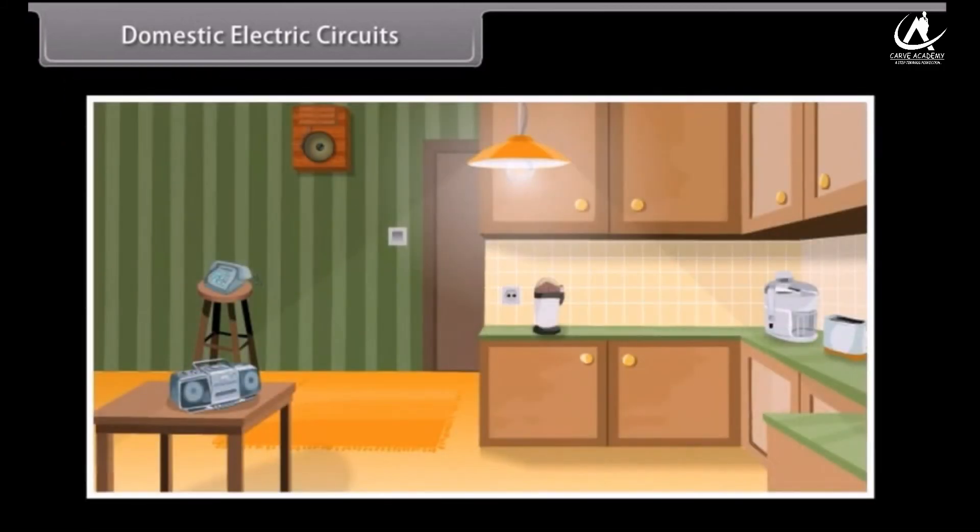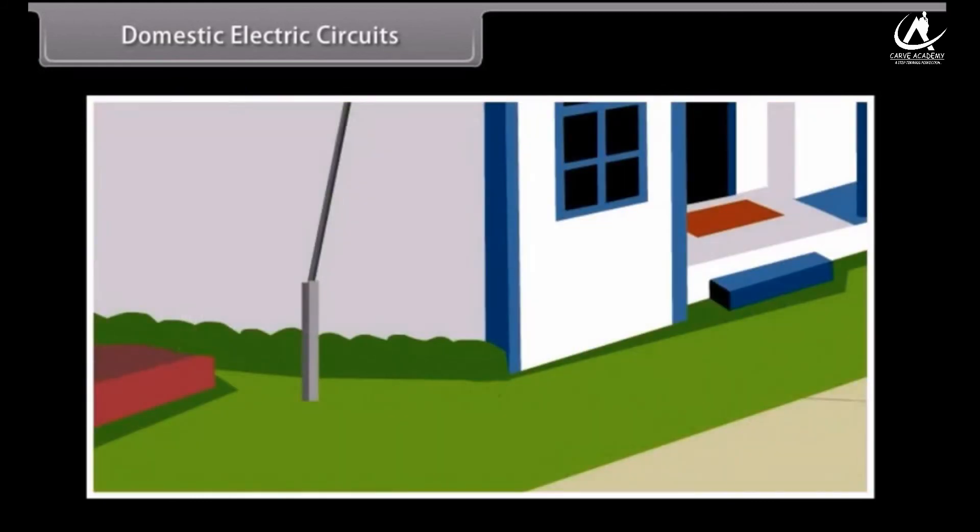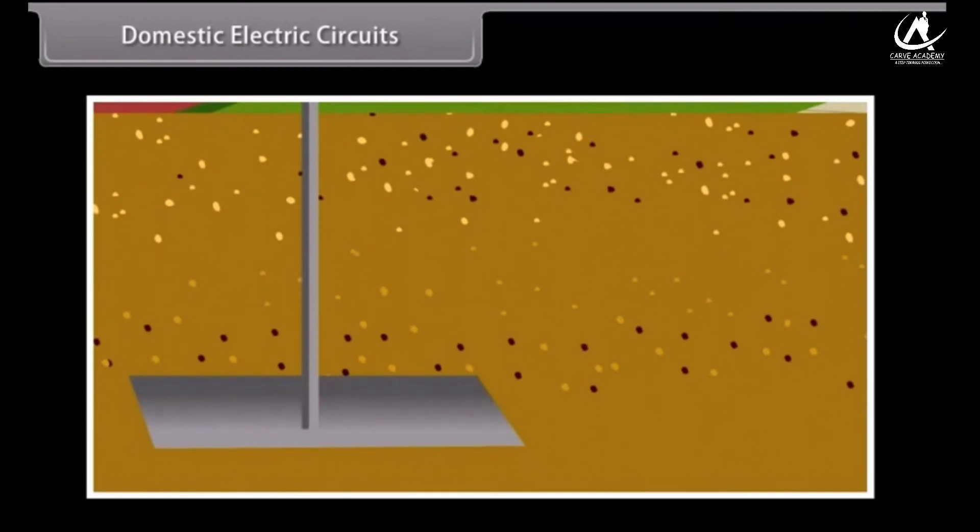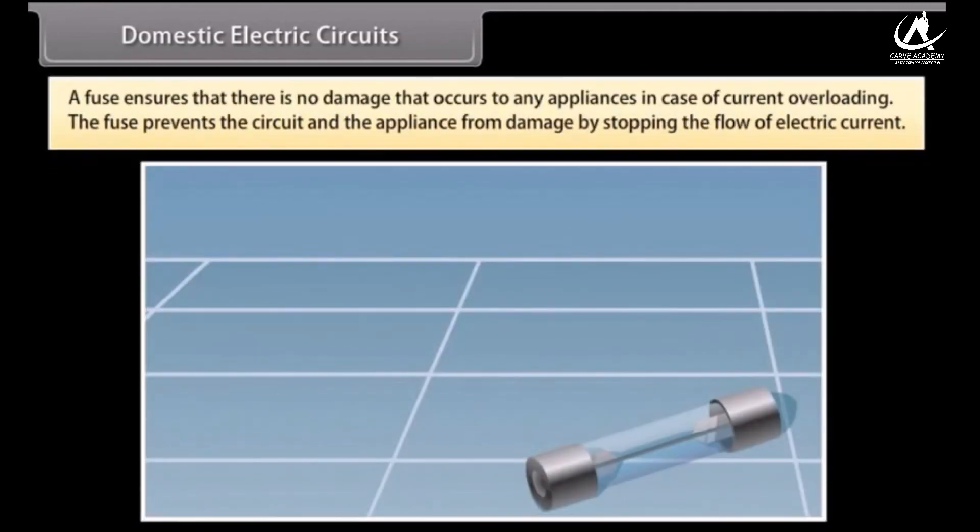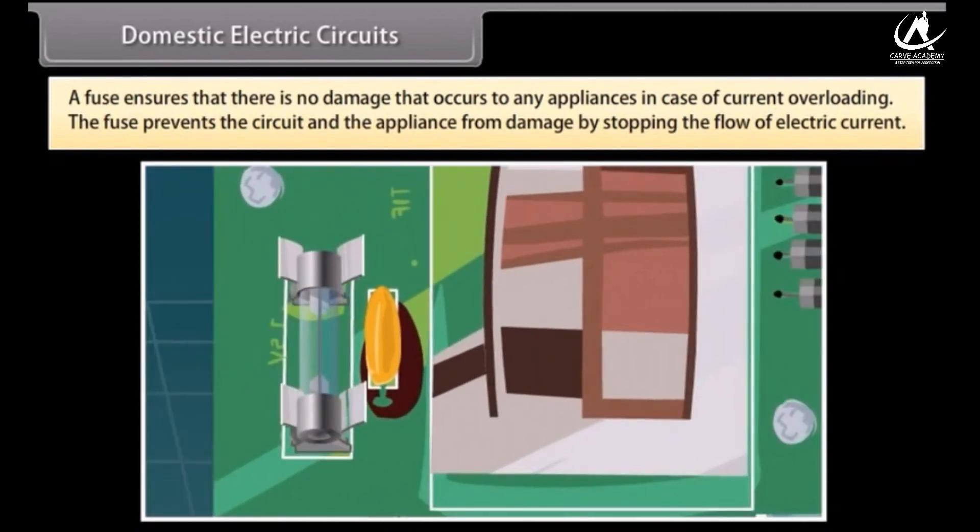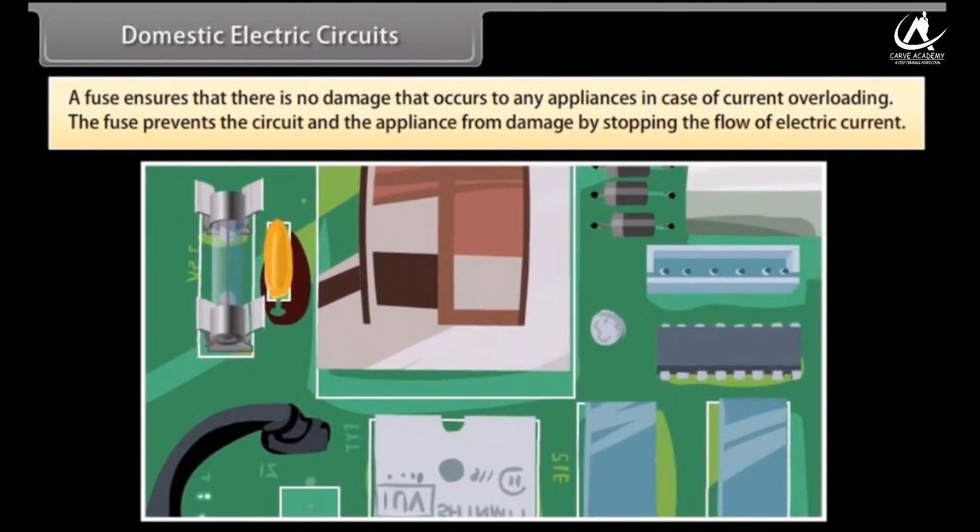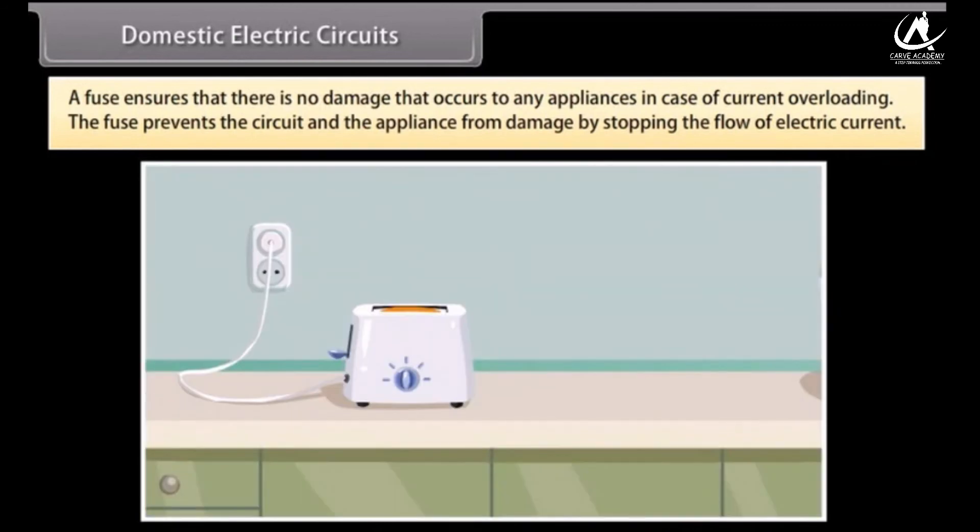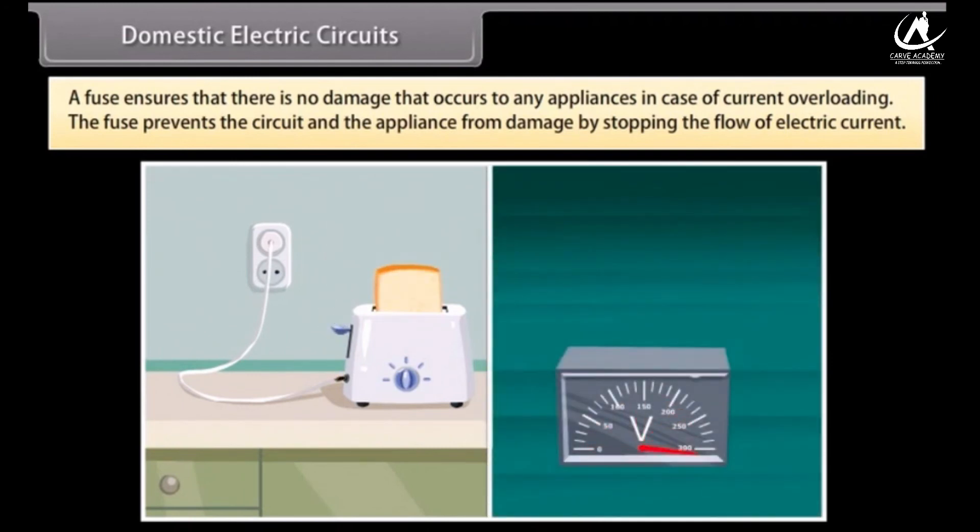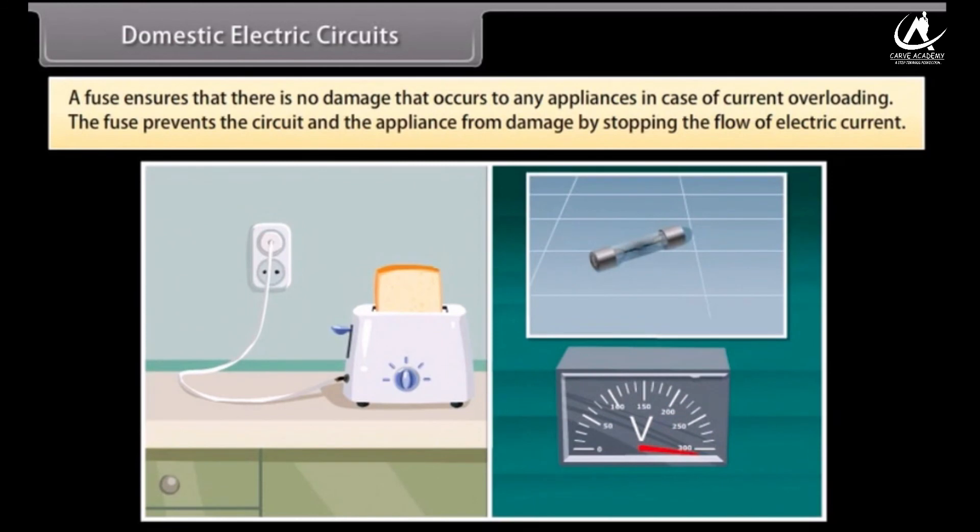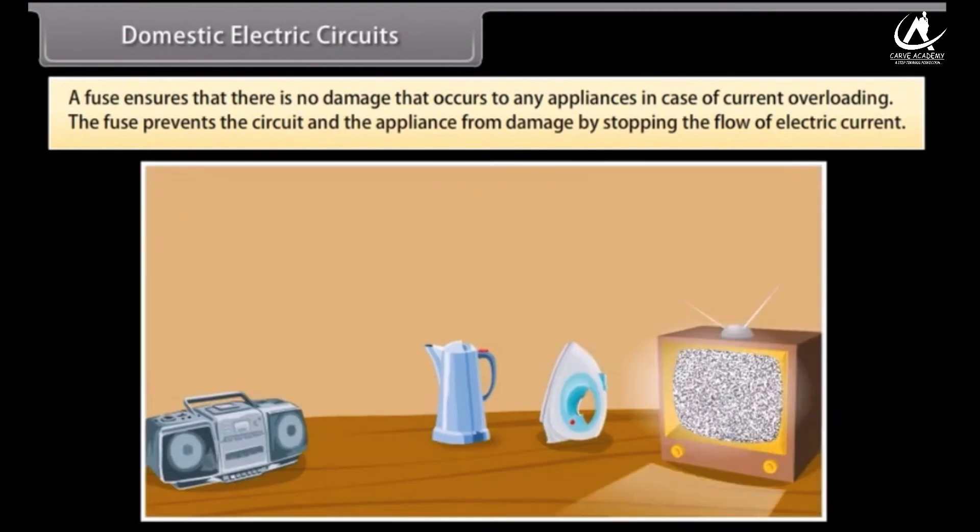There are different circuits used for different appliances being used in the house. The earth wire is connected to a metal plate deep into the earth to avoid receiving any severe shock in case of any leakage of current while using the appliances. A fuse is an important component of all circuits. It ensures that there is no damage that occurs to any appliances in case of current overloading. Overloading occurs when the live wire and the neutral wire come in contact with each other or there is a rise in the supply voltage. In this case, the fuse prevents the circuit and the appliance from damage by stopping the flow of electric current.